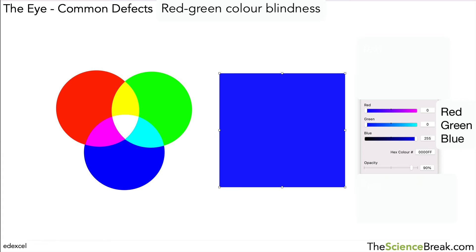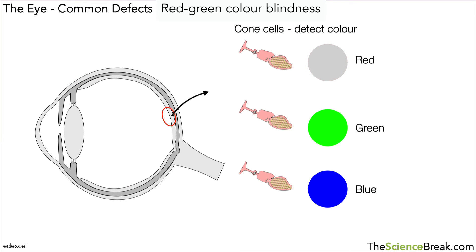So what causes red-green colour blindness? Well you may have guessed it. If you go back to our images of our cone cells, the red and the green cone cells don't work, don't function properly, and therefore we can only see shades of blue.